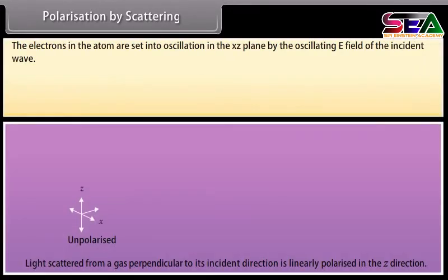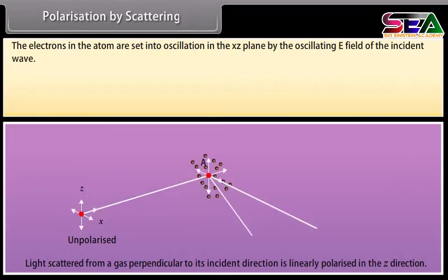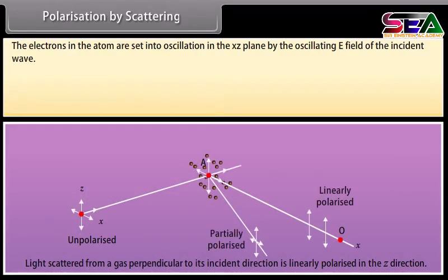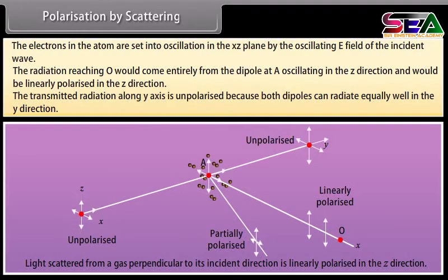Polarization by scattering. Consider an unpolarized light traveling along the y-axis strikes a gas atom at A. The electrons in the atom are set into oscillation in the xz plane by the oscillating E field of the incident wave. The radiation reaching O would come entirely from the dipole at A oscillating in the z direction and would be linearly polarized in the z direction. The transmitted radiation along y-axis is unpolarized because both dipoles can radiate equally well in the y direction.